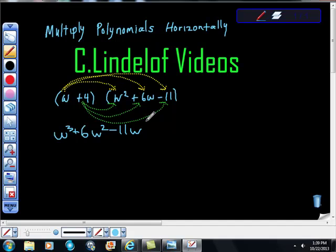And then 4 times w² will give you 4w². 4 times 6w will give you 24w. And 4 times negative 11 will give you negative 44.